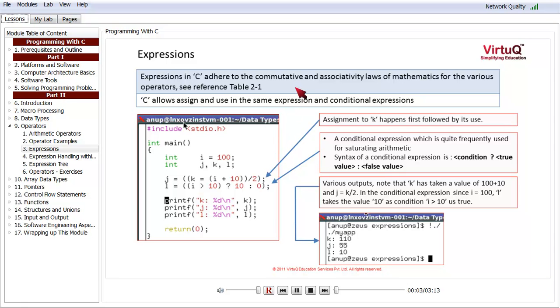Expressions in C actually adhere to the commutative and associative laws of mathematics. For the precedences and other various details, we request you to refer to table 2.1 in the textbook. An interesting feature of the C language is that it allows assign and use in the same expression, as well as in conditional expressions.